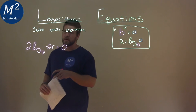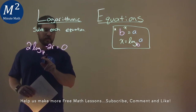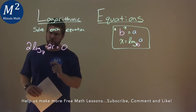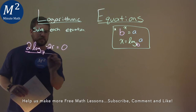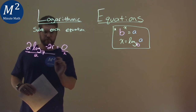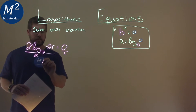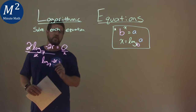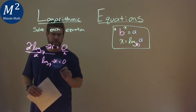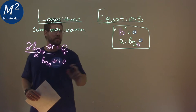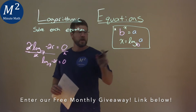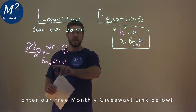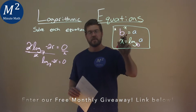We're given this problem: 2 times log base 7 of negative 2r equals 0, and we need to solve this. The first thing I need to do is divide both sides by 2. These 2s cancel, and we still have log base 7 of negative 2r, and that's equal to 0. From here, we use our formula. Our x value is 0, our base is 7, and a is negative 2r. We can rewrite that using the exponential form.